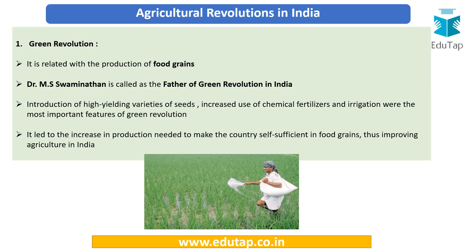We will now cover agricultural revolutions in India, starting with the green revolution, which is the most successful and famous revolution — it is related to the production of food grains. Dr. M.S. Swaminathan is called the father of green revolution in India, and Dr. Norman Borlaug is called the father of green revolution in the world. In bringing the green revolution to India in the 1960s, Norman Borlaug played a very important role, while M.S. Swaminathan helped in the implementation.